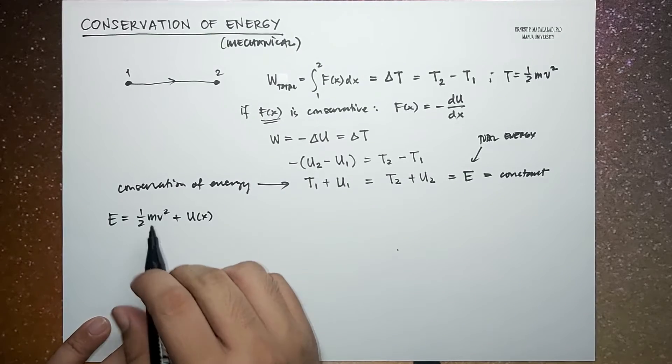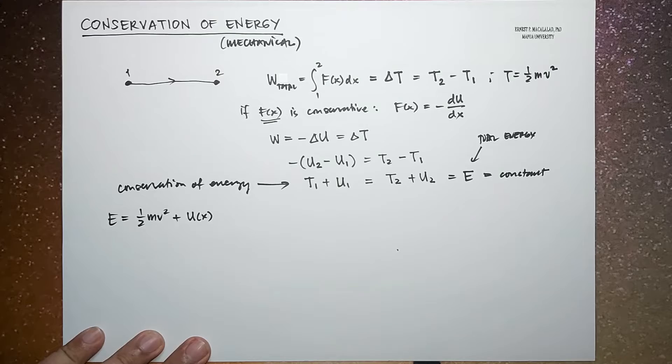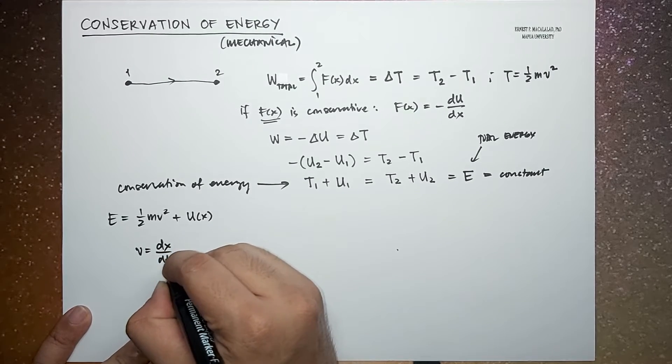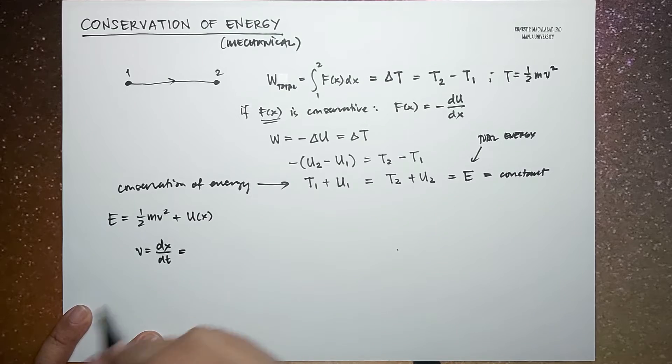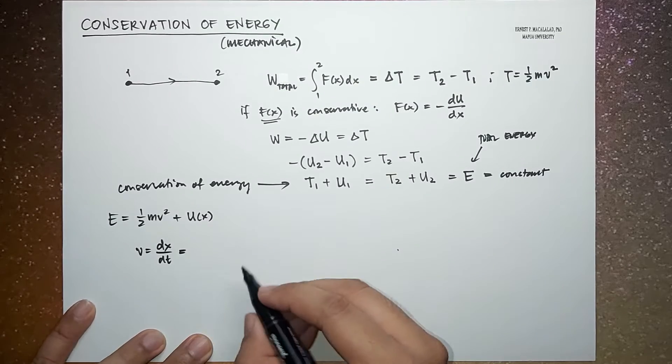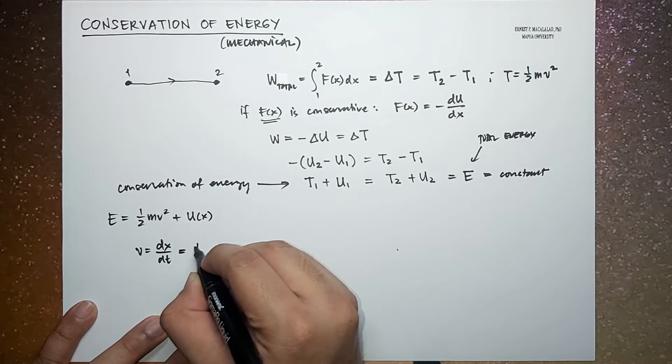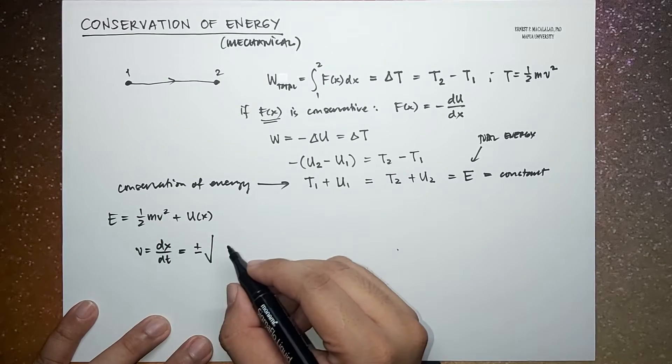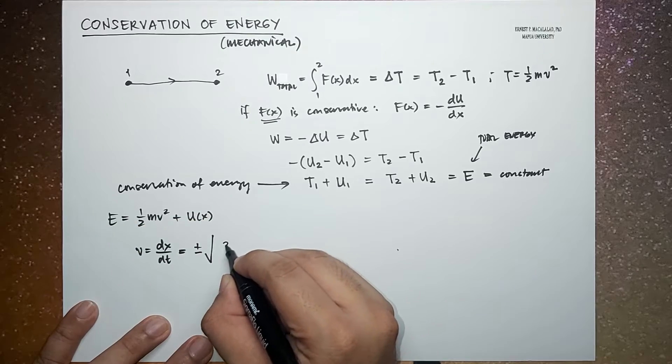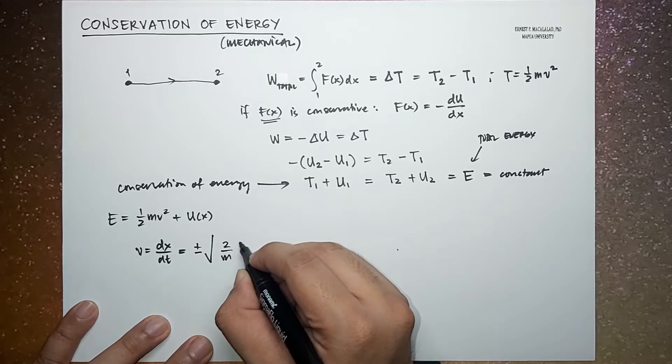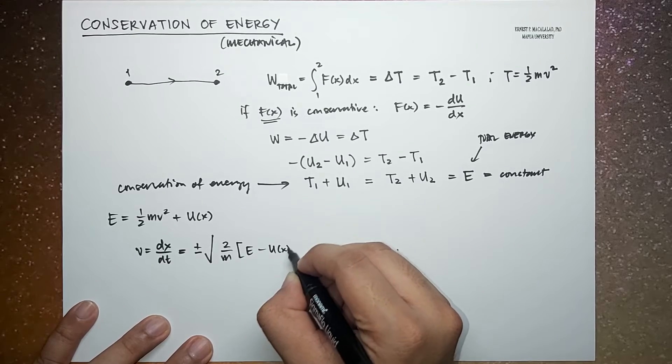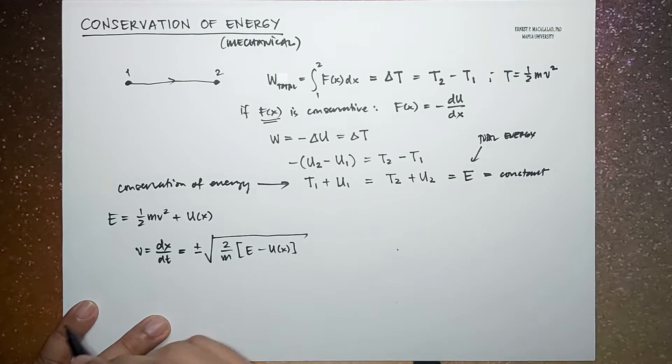So from here, the velocity V, or the speed V, which is the derivative of position with respect to time, can be determined as plus or minus square root of 2 over m times E minus the potential energy at position U.